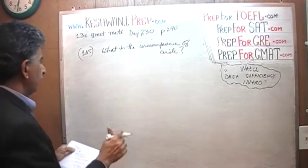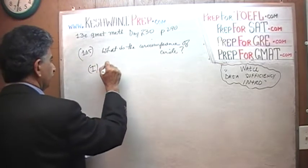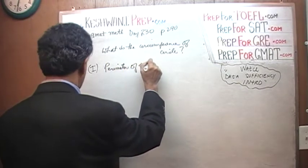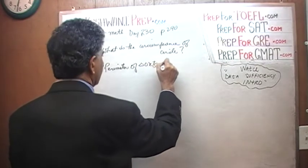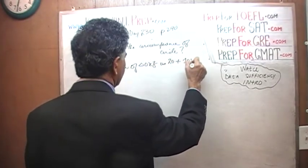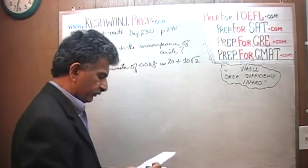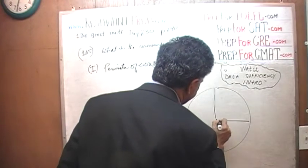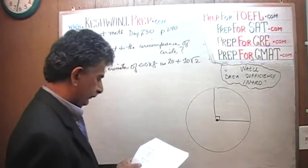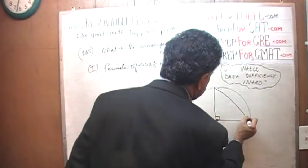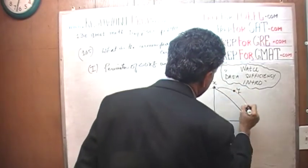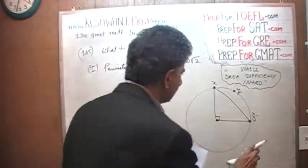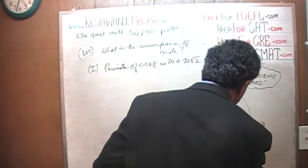The first thing is going to tell us that the perimeter of triangle OXZ is 20 plus 10 times root 2. Let's draw the picture first, so we have it here. Here is our circle. We are given a 90 degree angle here and here is our arc x, y, and z. This point down here is z.